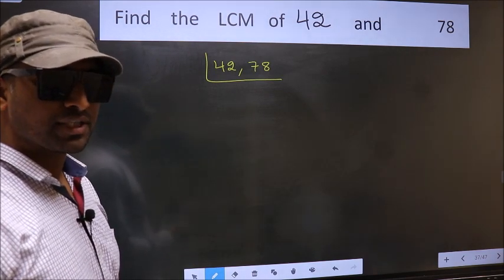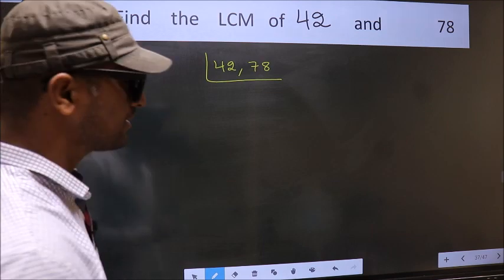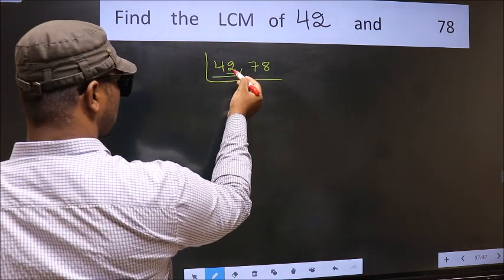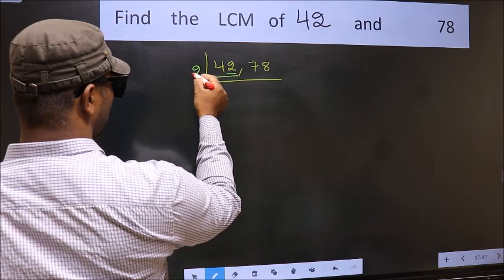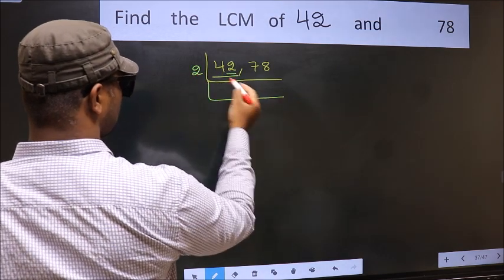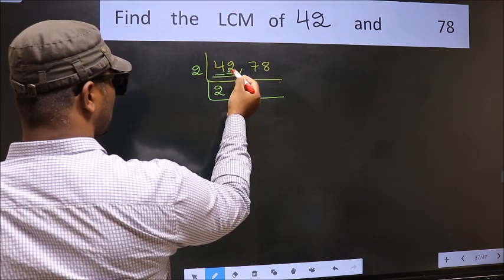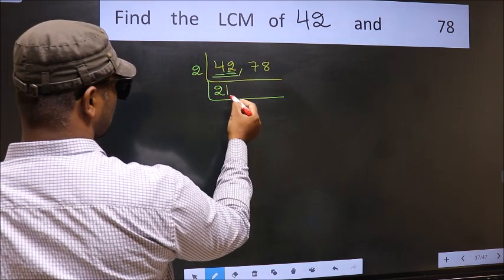Now you should focus on the first number which is 42 here. For this number last digit 2, even so take 2. First number 4, when do we get 4 in 2 table? 2, 2s 4. The other number 2, when do we get 2 in 2 table? 2, 1s, 2.